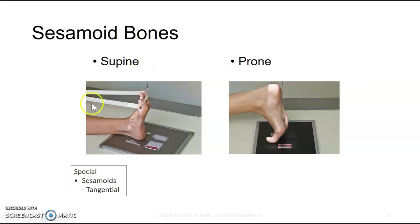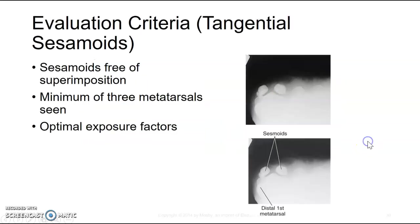They use a tourniquet to pull the toes back and dorsiflex the feet. There's also a prone version — same idea — and you're looking for the little sesamoid bones.